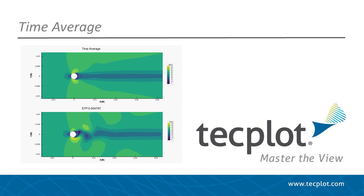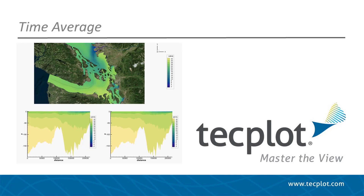Computing an average over time is an important method in CFD to understand overall trends in turbulent flow fields. In ocean science, a time average can be used to remove the effects of seasonality to understand long-term trends. Thankfully, this can be accomplished fairly easily in Tecplot 360.